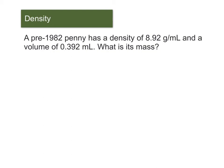And so here's an example where we know the density, but we don't know the mass. It says a pre-1982 penny has a density of 8.92 grams per milliliter and a volume of 0.392 milliliters. So what is its mass? And we know that the equation for density is density equals mass divided by volume.